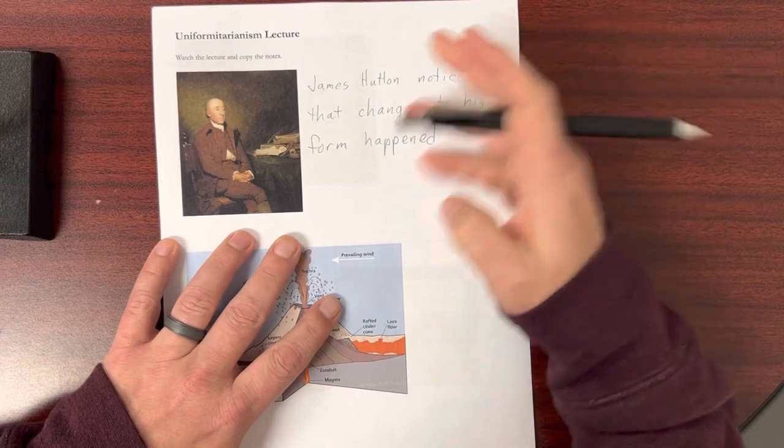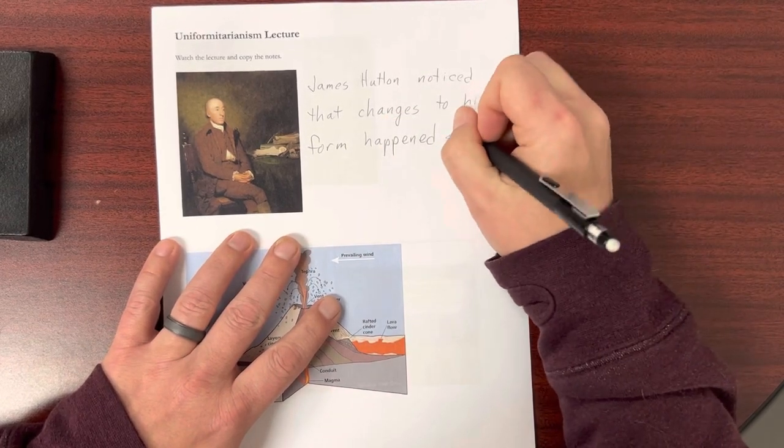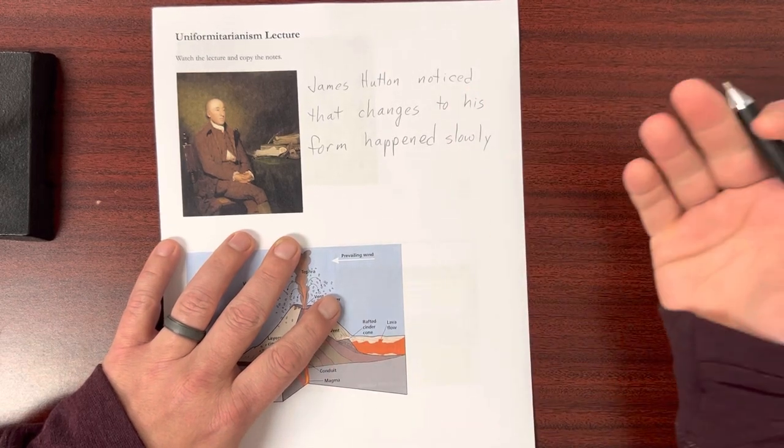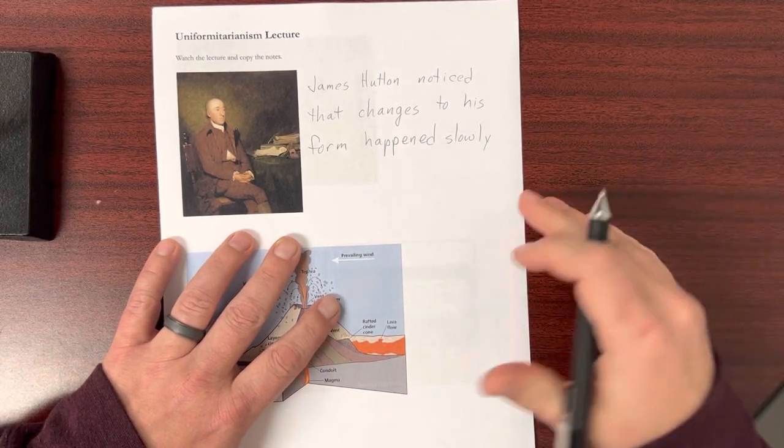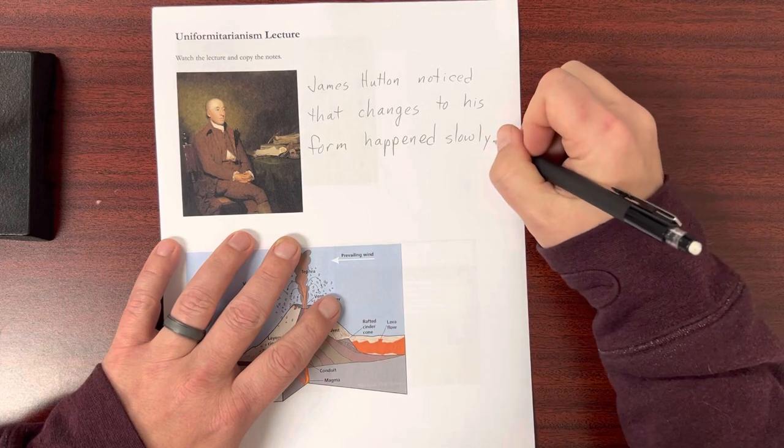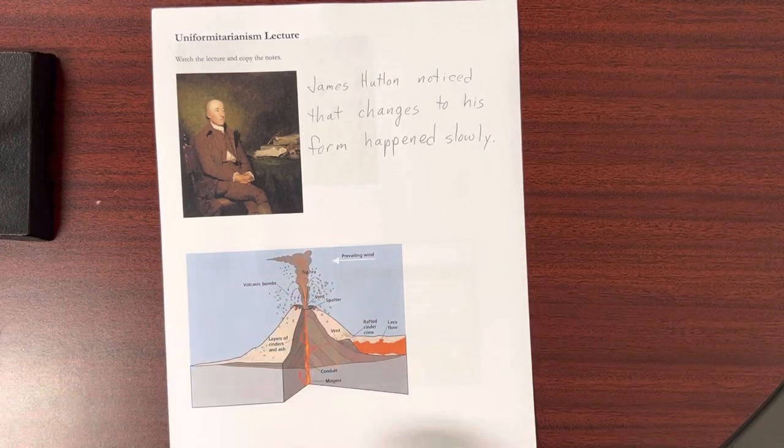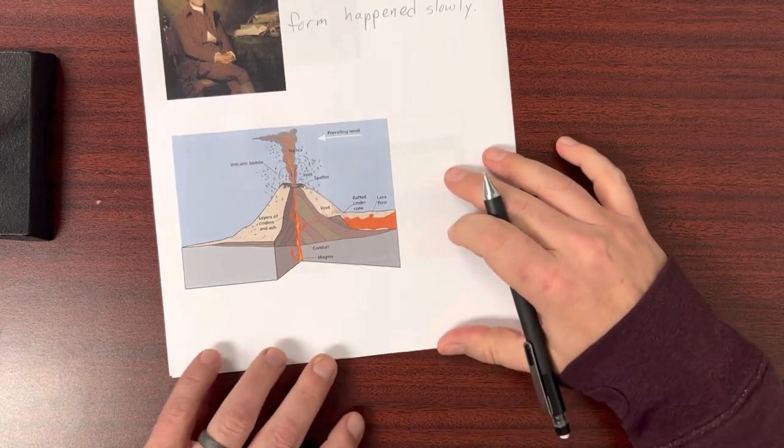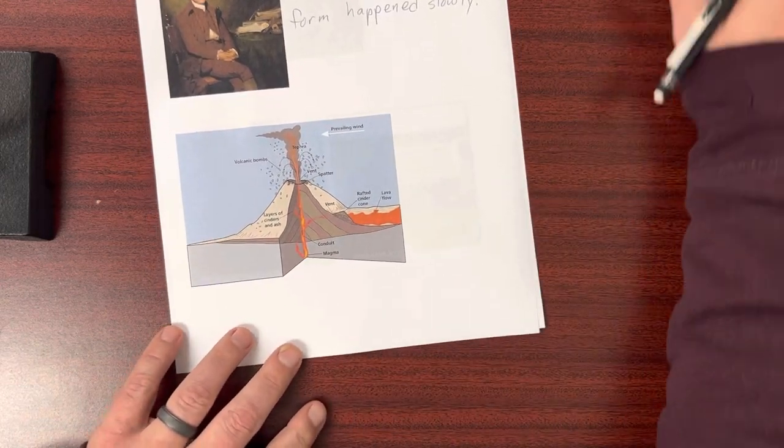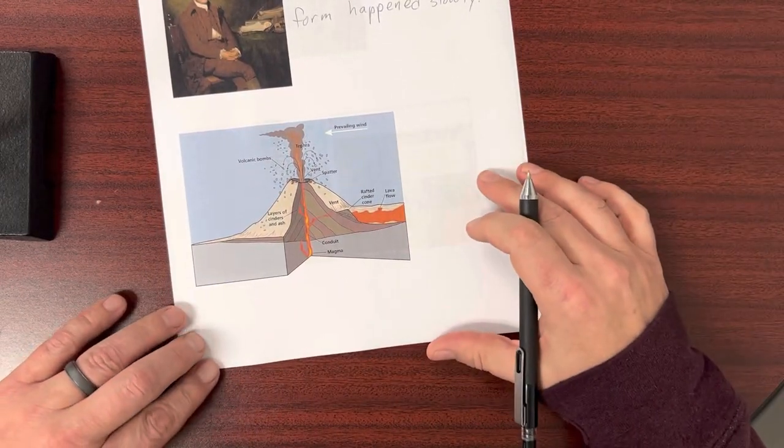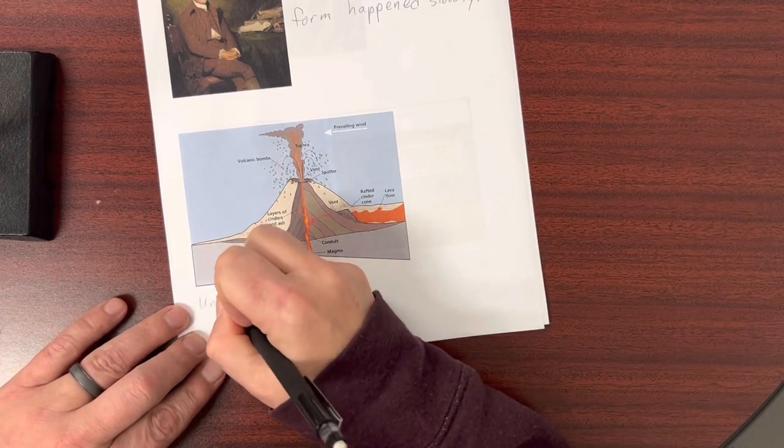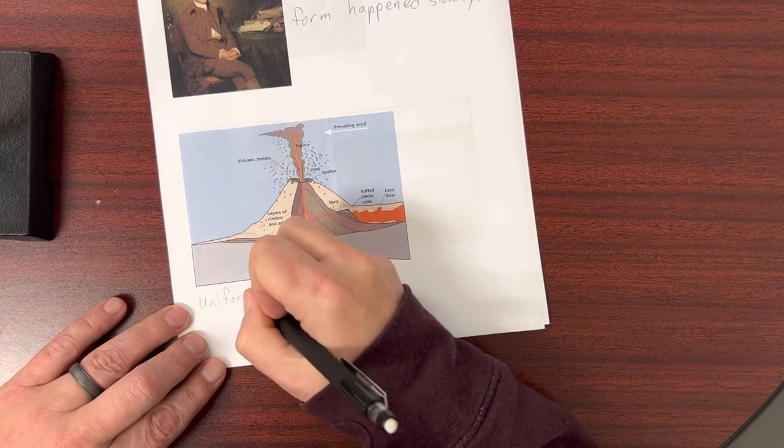And what he realized was that if these processes that he was seeing were slow and took years and years to happen, then maybe that could tell him something about how the earth had changed in the past. And he came up with the central idea of geology. It's kind of a mouthful here: uniformitarianism.